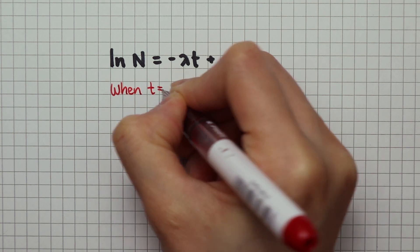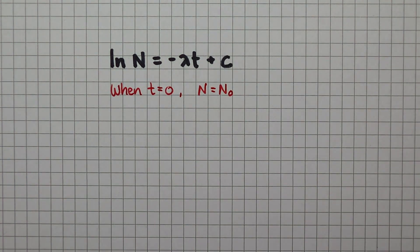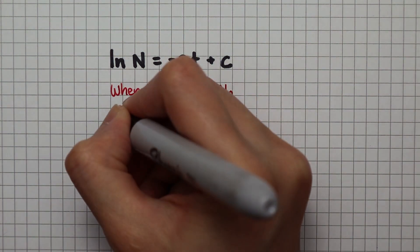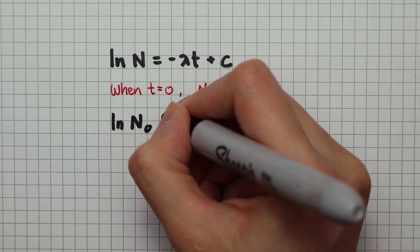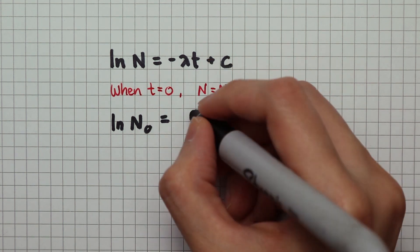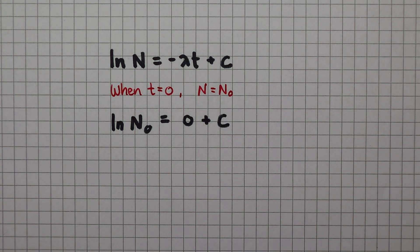That is when none of the nuclei in the sample has decayed. So we have the full initial number of nuclei. We can represent the initial number of nuclei by n subscript 0. Substituting, we have natural log of n0. This cancels. So the constant c is just natural log of n0.